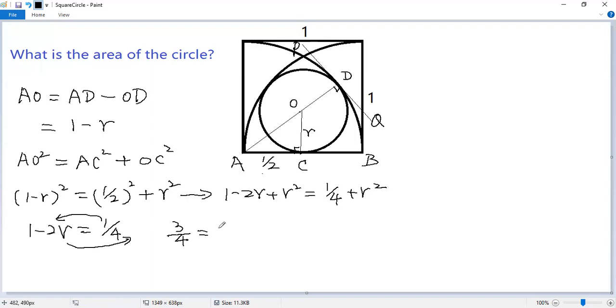Now move this term to the left side, this term to the right side. So 1 minus a quarter equals 3 over 4, the right side, 2r. Both sides divided by 2, so we get r equals 3 over 8.